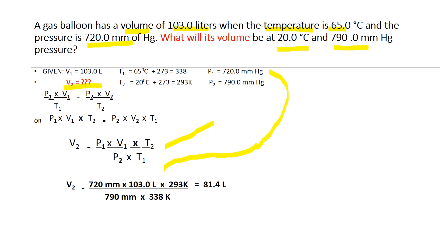Substitute all the data into the equation for V2, making sure to cancel the units — Kelvin cancels with Kelvin — and the resulting unit is liters. The answer is 81.4 liters.